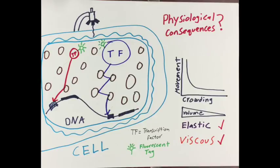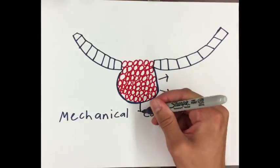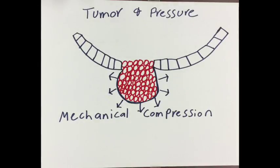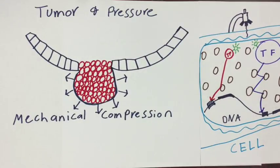One example of when cells may become more crowded is when they are mechanically compressed, for example, in a tumor. This process may lead to changes in reaction rates and gene expression. Remember our two transcription factors?